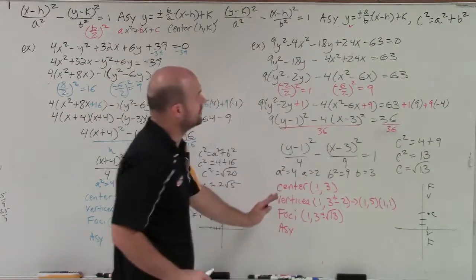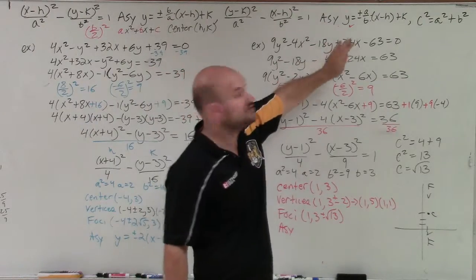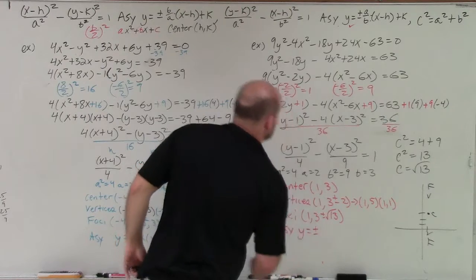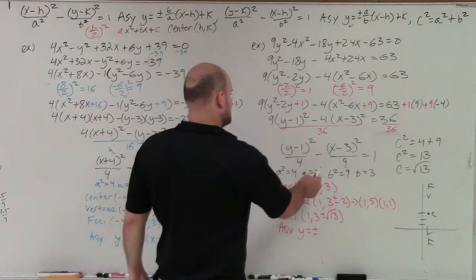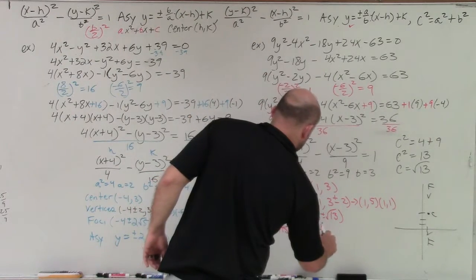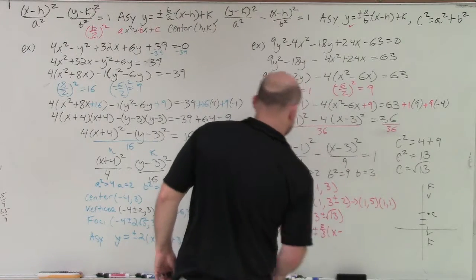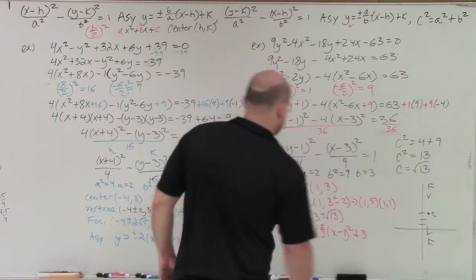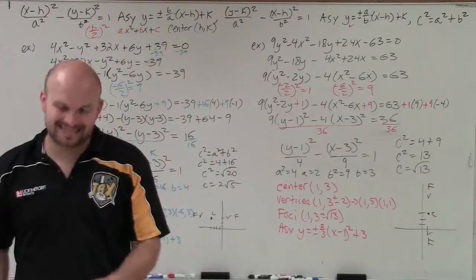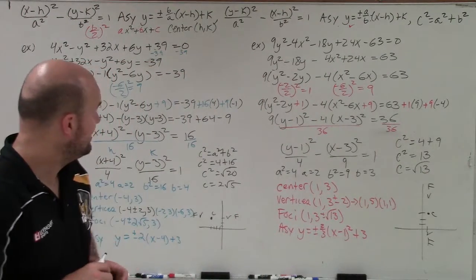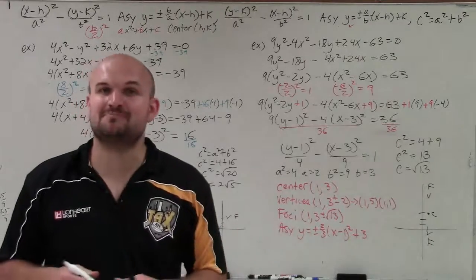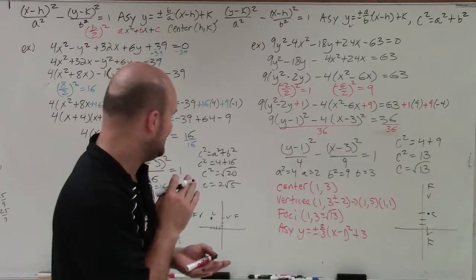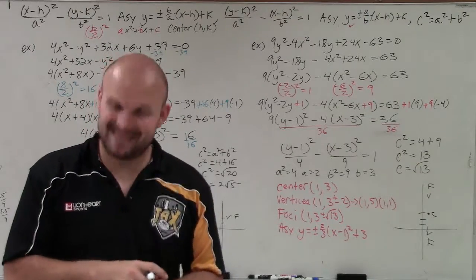Last but not least is the asymptote. Since this is a vertical transverse axis, I use that equation, plugging in a, b, h, and k: y = ±(a/b)(x − h) + k = ±(2/3)(x − 1) + 3. And there you go, ladies and gentlemen — that is how you complete the square to write a hyperbola in standard form and determine the vertices, foci, asymptotes, and center.